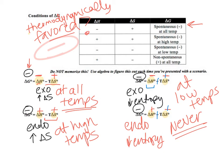I've graded AP student responses where students used only enthalpy to determine spontaneity, saying things like 'exothermic reactions are all spontaneous.' That's not correct — you can see here, especially with a decrease in entropy, there are restrictions. You cannot determine thermodynamic favorability from delta H or delta S alone. You have to look at both independently. Know the always case — exothermic plus increase in entropy — and the never case — endothermic plus decrease in entropy — and you can reason through the others.